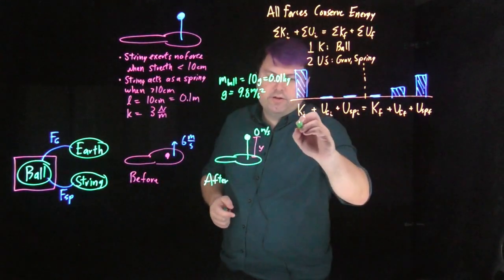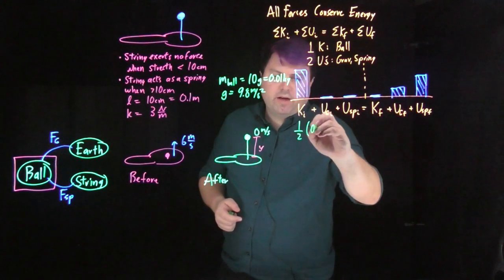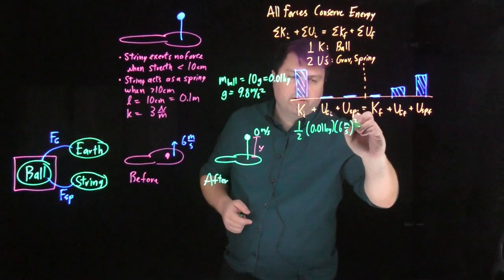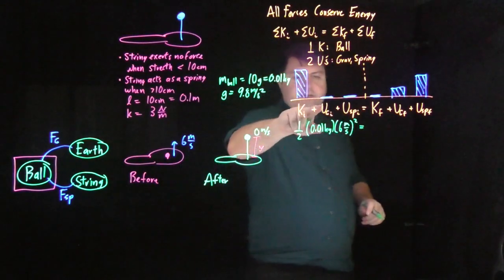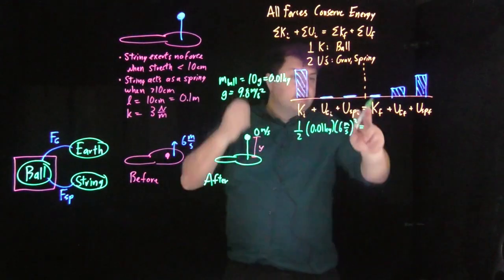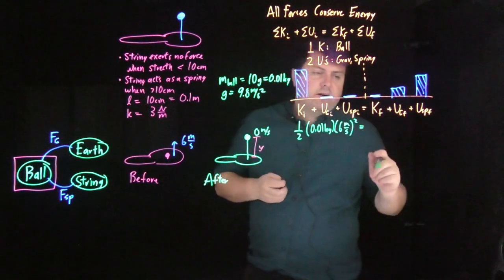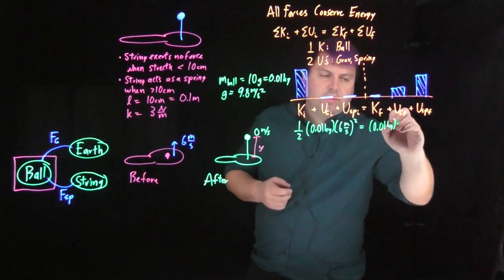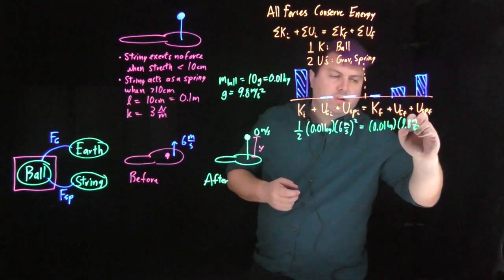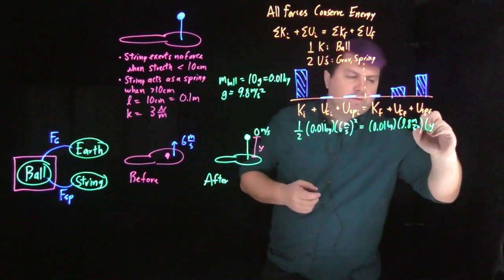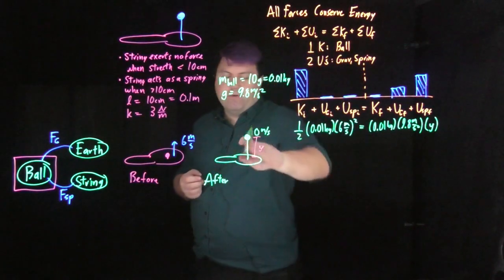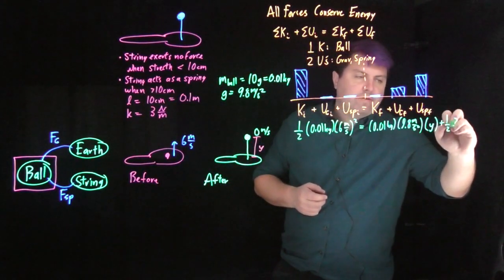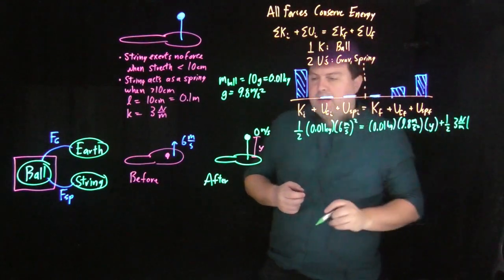Our initial kinetic energy is going to be one-half times 0.01 kilograms times 6 meters per second quantity squared. This is zero, this is zero, we don't have to write it. Our gravitational potential final is going to be 0.01 kilograms times 9.8 meters per second squared times this final height y.